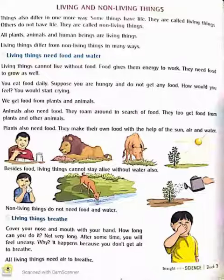Now all these things differ in one more way. Some things have life and some do not. Those things which have life are called living things, and the things which don't have life are called non-living things. All plants, animals, and human beings are living things, and all things except plants, animals, and human beings are called non-living things.